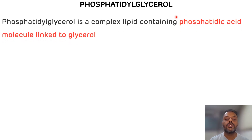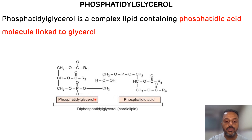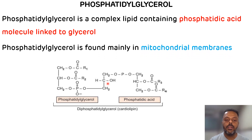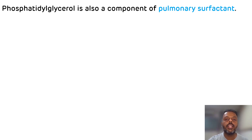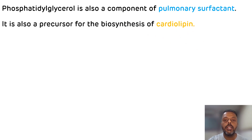Phosphatidylglycerol is composed of phosphatidic acid attached to glycerol. Diphosphatidylglycerol is known as cardiolipin, and cardiolipin is found in the inner mitochondrial membrane. Phosphatidylglycerol is also found in the mitochondrial membrane. The significance of phosphatidylglycerol is that it is a component of pulmonary surfactin and a precursor for the synthesis of cardiolipin. Cardiolipin is the only phospholipid which is antigenic.